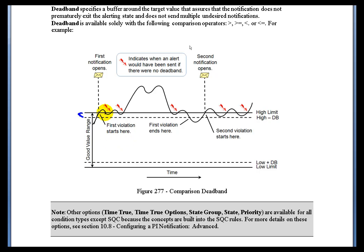For example, if you look at this point right here, that's where we do the initial Alarm State, but because of the Deadband, when we go back out of Alarm at this point right there, we're not going to go out of Alarm because we haven't crossed the Deadband yet. So the Deadband is a value below which we must come before we go out of an Alarm State.